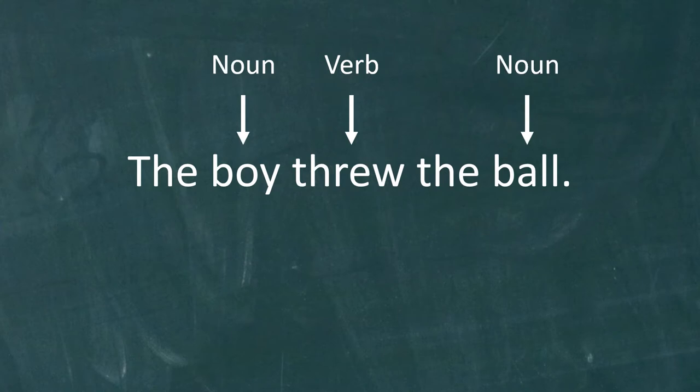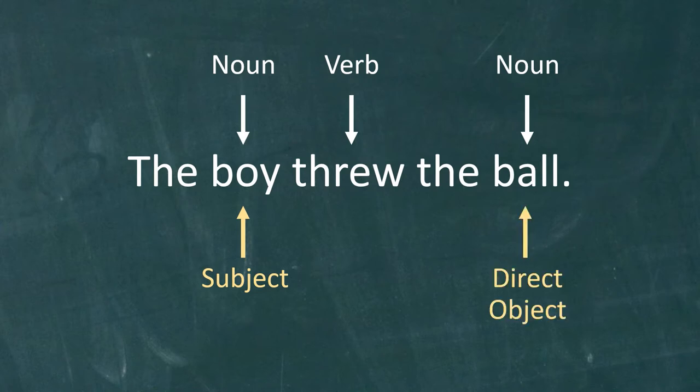Let's talk about the function of these two nouns. The first noun, boy, functions as the subject of the sentence. The boy is the one who throws. The second noun, ball, functions as the direct object. The direct object is the recipient of the action of the verb. What is thrown? The ball is thrown.